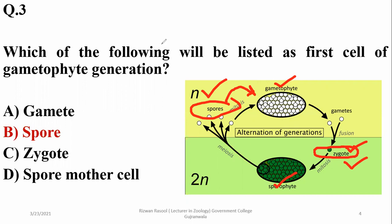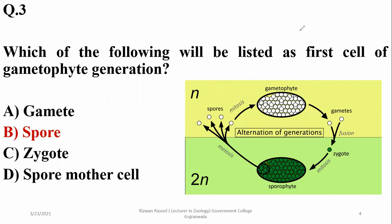Spore mother cell is the last diploid cell — the last cell of the sporophyte generation — and gametes are considered the last cells of the gametophyte generation.